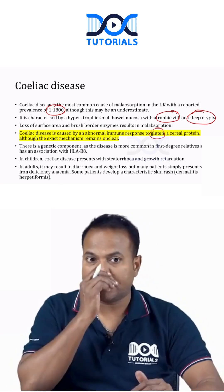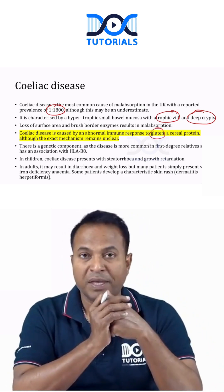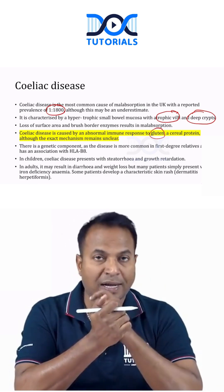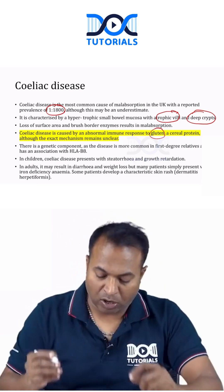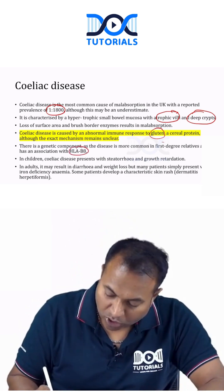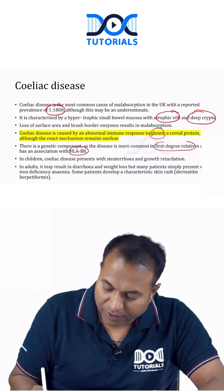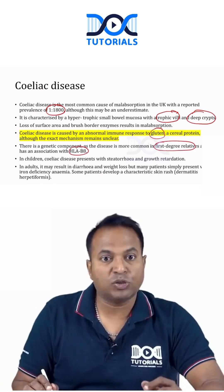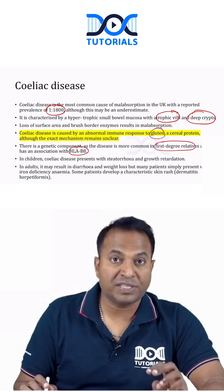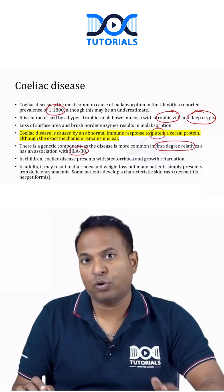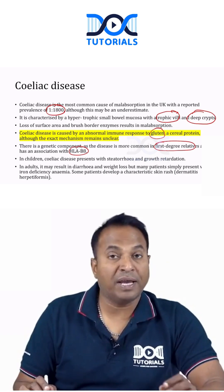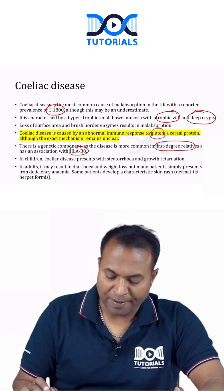Celiac disease is caused by an abnormal immune response to gluten, a cereal protein found in the diet. The exact mechanism remains unclear. There is a genetic component associated with HLA-B8, and it is more common in first-degree relatives. In children it presents with steatorrhea and growth retardation; in adults, with diarrhea and weight loss.